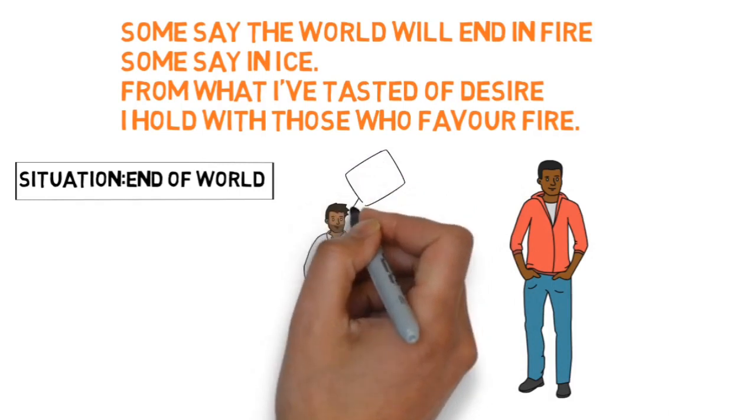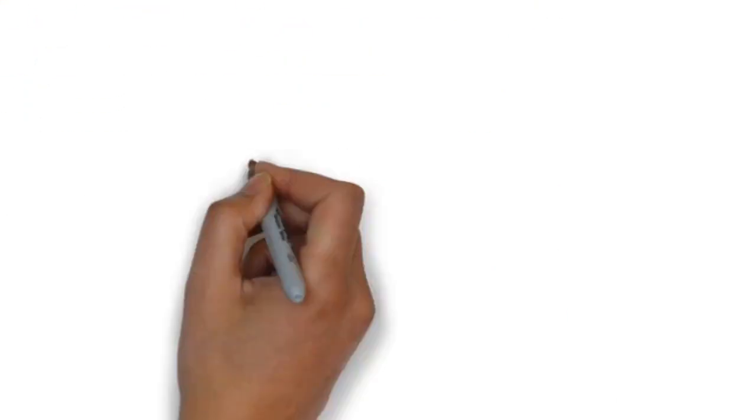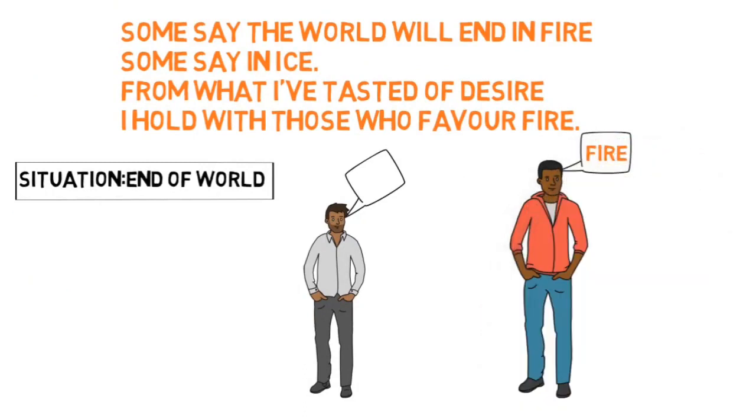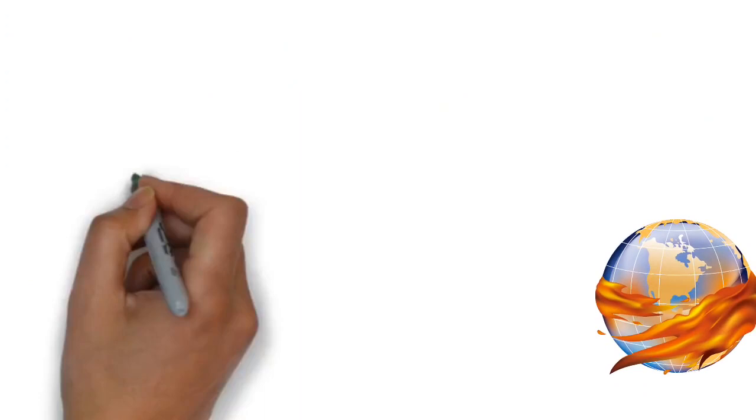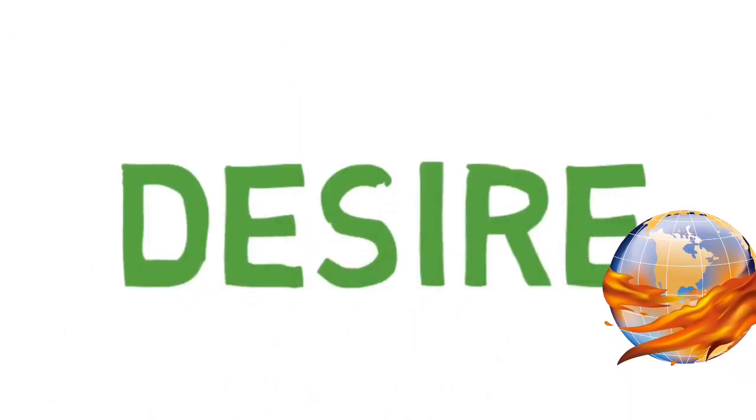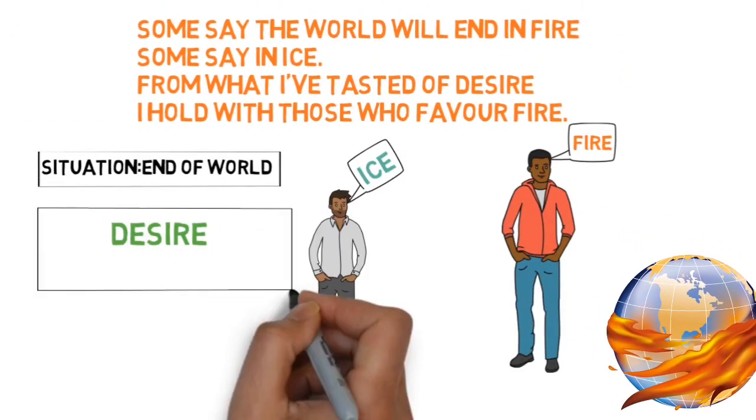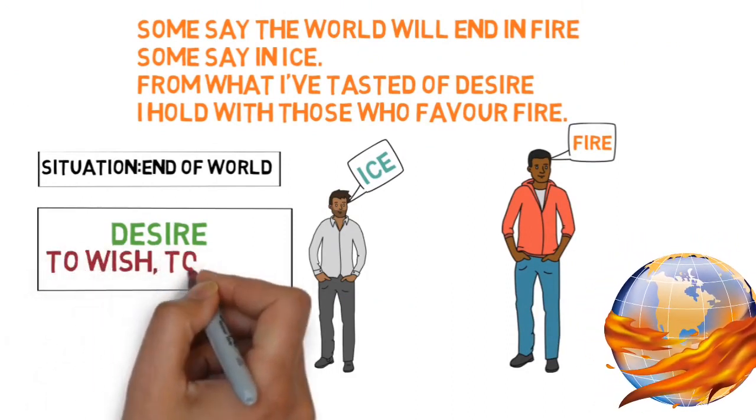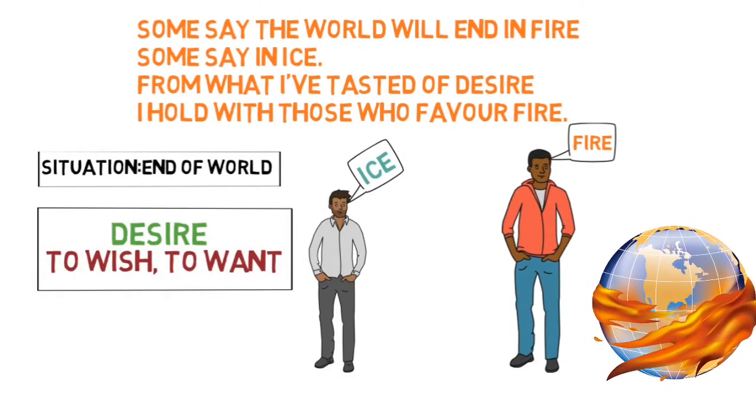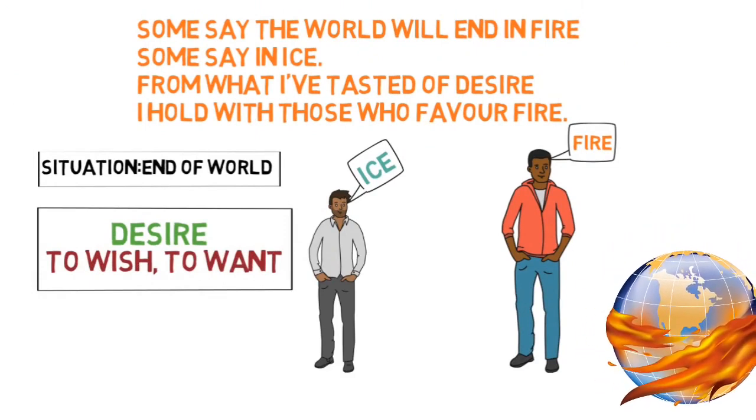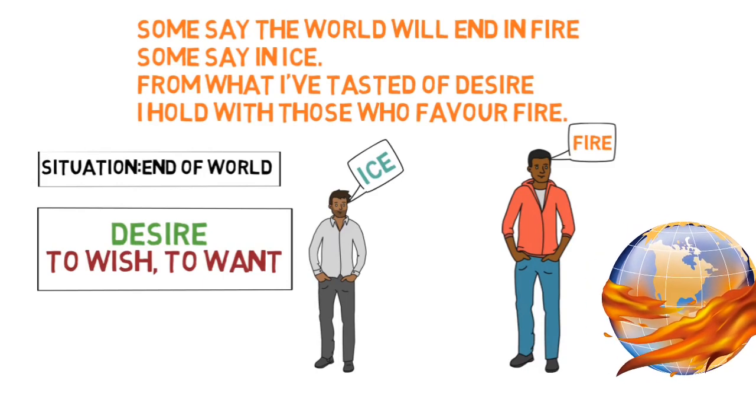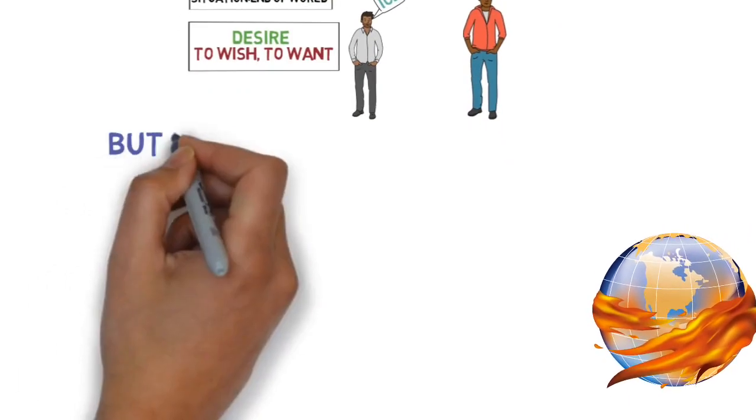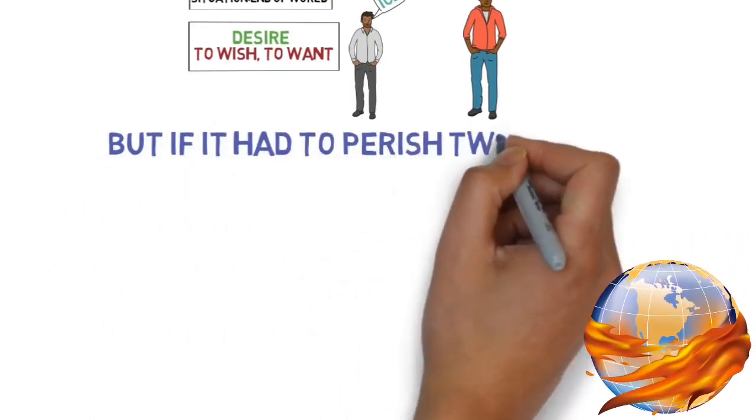So in the first stanza, he is saying that some people believe that this world will end in fire, and some people believe that this world will end in ice. I am with them who favor fire, meaning I am with those people who favor fire.